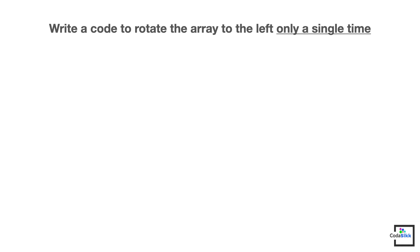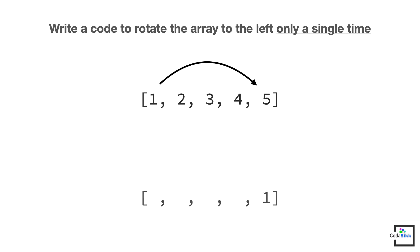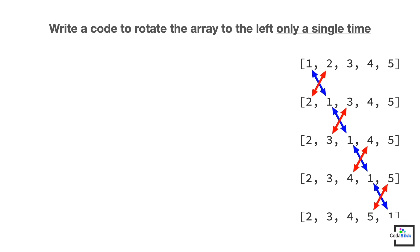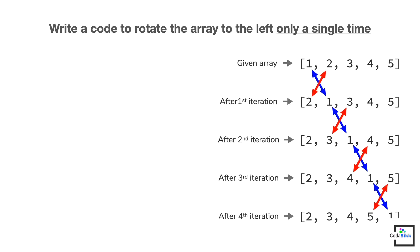Our first goal is to write a piece of code that rotates the array to the left only a single time. When we rotate this array one time to the left, the first element becomes the last, the second element becomes the first, the third element becomes the second, and so on. We can implement this using two variables and a loop — I recommend a for loop as its syntax is concise. The plan is to swap two elements at a time for a total of n minus 1 times, where n is the length of the array.